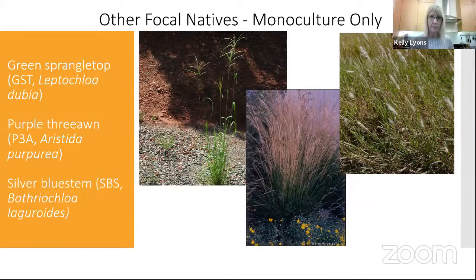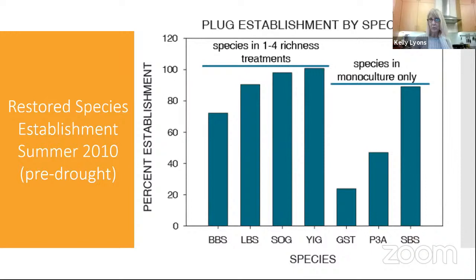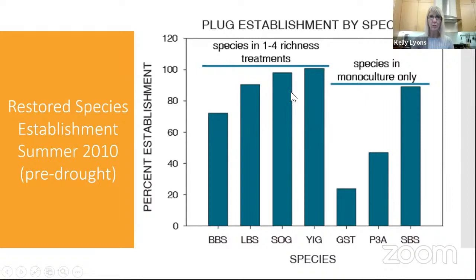This shows how well the species established in summer 2010 — the first year. Establishment for big bluestem, little bluestem, side oats grama, and yellow Indian grass was terrific. Less so for green sprangletop and purple threeawn, but silver bluestem did really well. Then those of you around at the time may remember the huge exceptional drought that hit right after summer 2010.